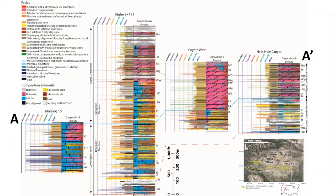Here's a cross-section spanning the basin. These sections have facies and rock fabric plotted to the left, and composition and porosity plotted to the right. The outcrops — Highway 191 and Hell's Hole Canyon — are nearly complete sections of the Green River. However, the top portion is often ambiguous because it interferes with the underlying deformation.